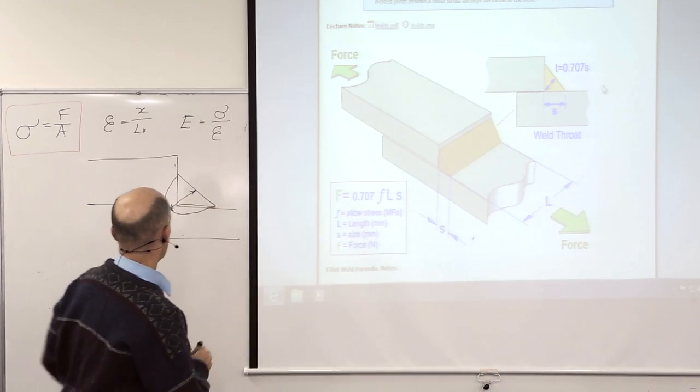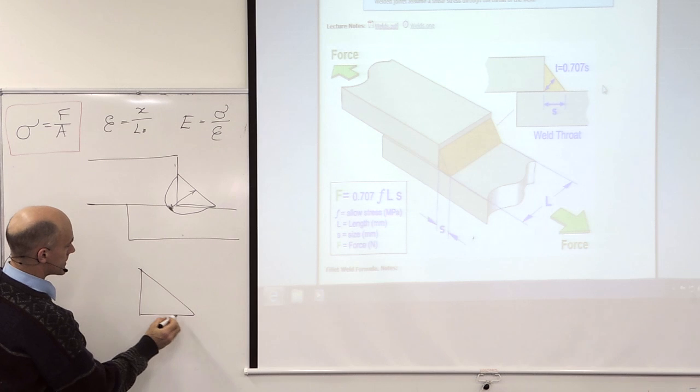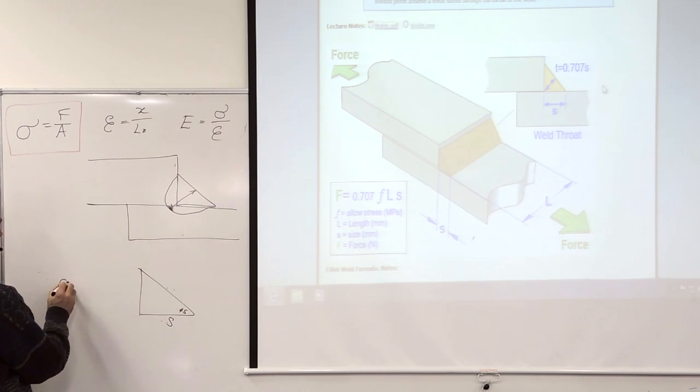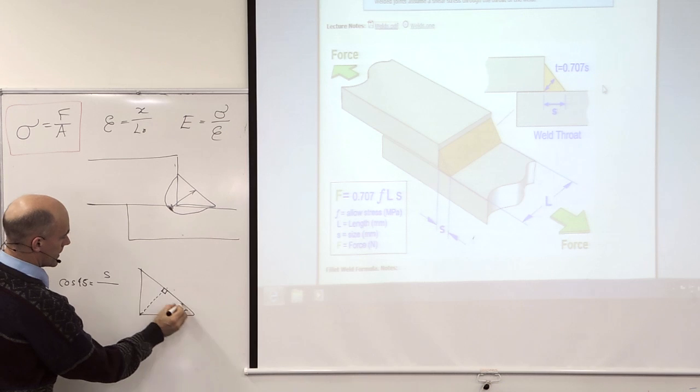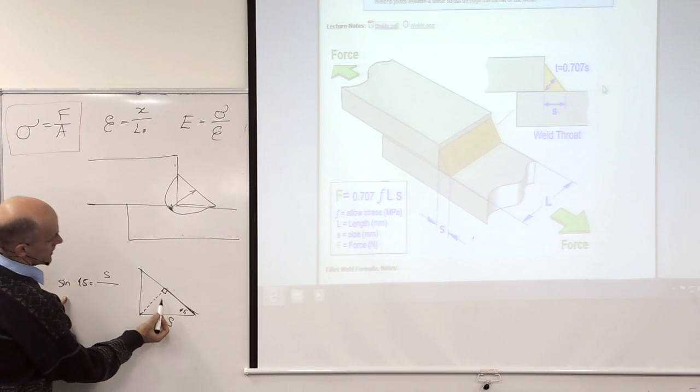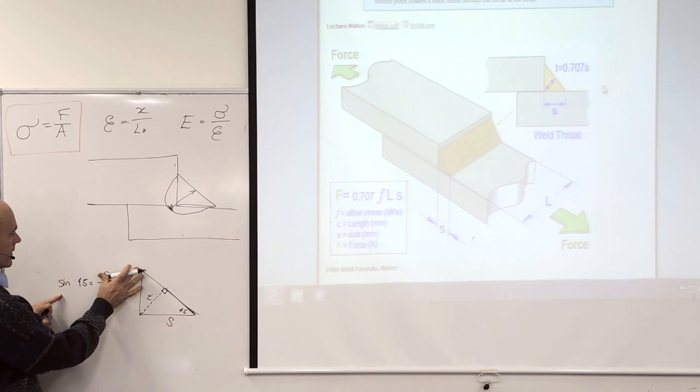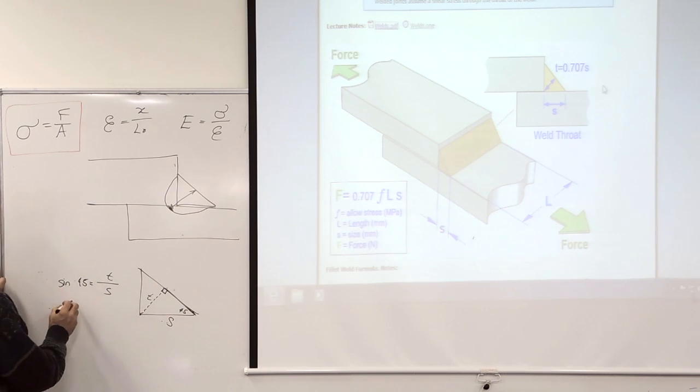So where do we get the 0.7 from? That's S. This is 45 degrees. This is the hypotenuse. So we're trying to get this thickness here, T. So sine of 45 is T over S. And sine 45 is...